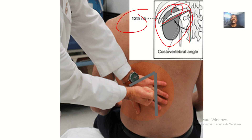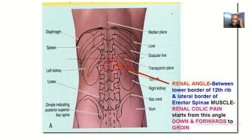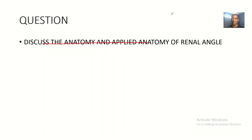To repeat: the renal angle is the angle between the lower border of the twelfth rib and the outer border of the erector spinae muscle. Please use your thorax anatomy atlas to see the erector spinae muscle, as the images here are skeletal only. That's it about the anatomy and applied anatomy of the renal angle — see you in the next tutorial.